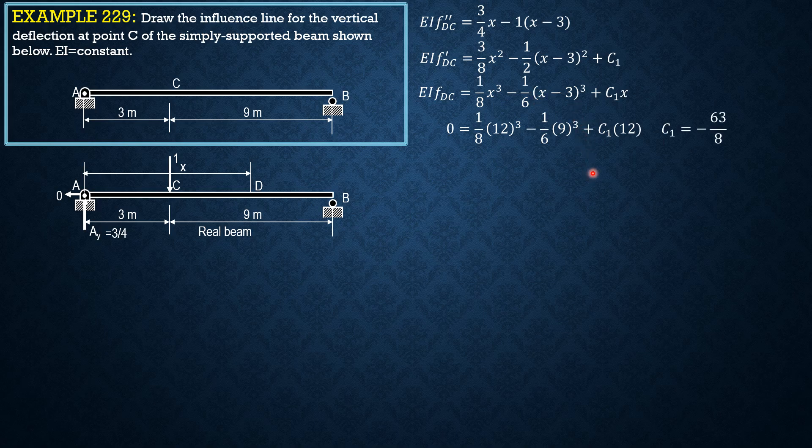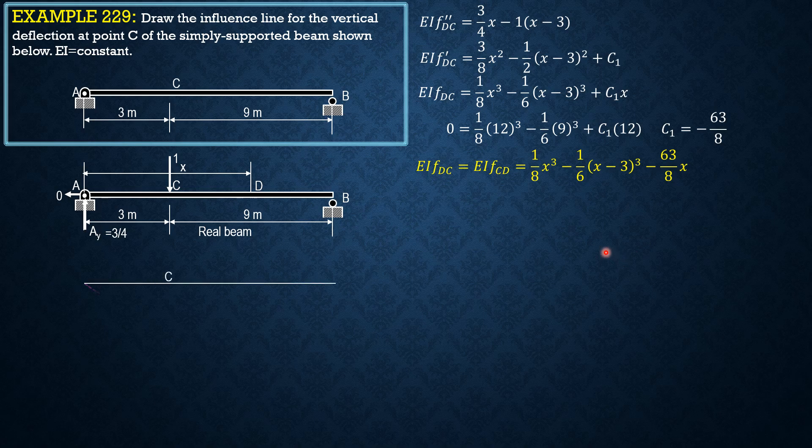Substitute here: EIF DC which equals EIF CD equals 1 eighth of X cube minus 1 sixth of quantity X minus 3 cube minus 63 over 8 times X. Now sketching the influence line for vertical reaction at C.